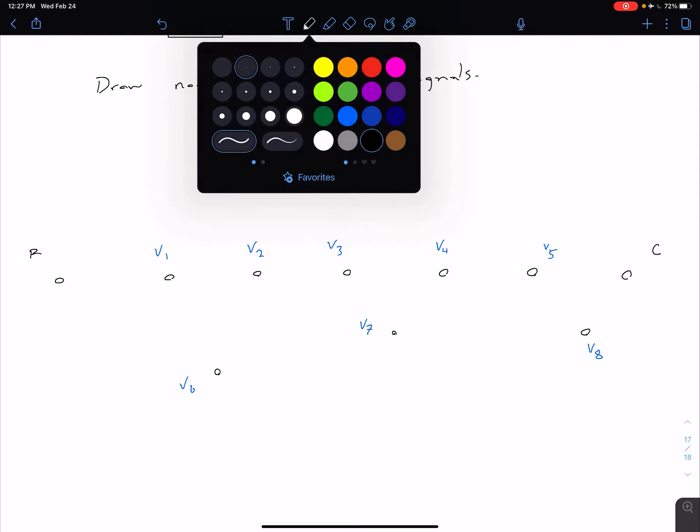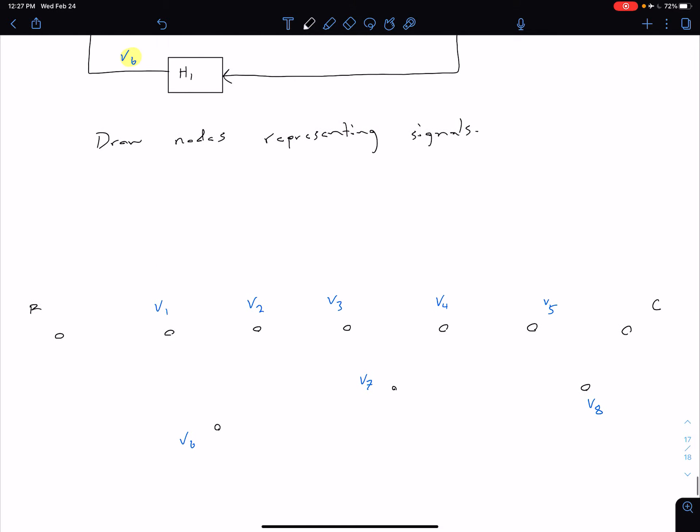All right, so first step is done. So we've drawn our nodes indicating our signals. Now what we want to do is connect with branches.